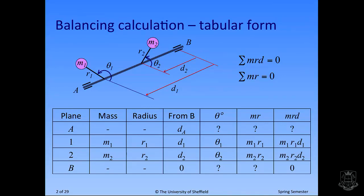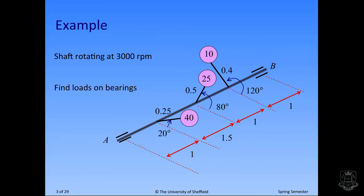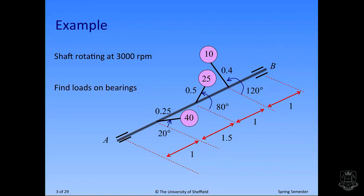If you skip along to the end column, because we've got zero in distance from B, when we multiply by D in the last MRD column, that also makes the bottom entry zero. So if you're trying to find something at a plane, take moments about that plane because it makes that first entry in the MRD column zero, and that simplifies the problem. Everywhere else, question marks mean something we've got to find; values mean we can work them out from information we already have.